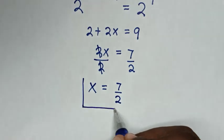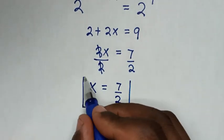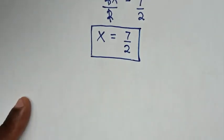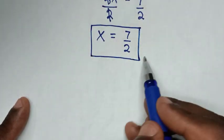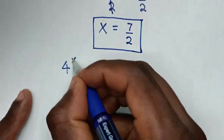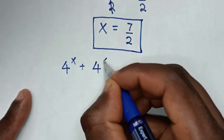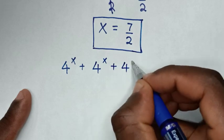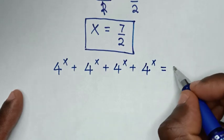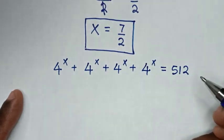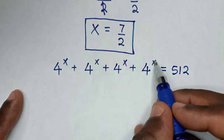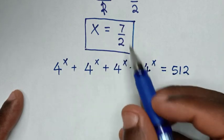Therefore x equals 7/2 is the final answer. Now to check, we substitute x equals 7/2 back into the original problem: 4 power of x plus 4 power of x plus 4 power of x plus 4 power of x equals 512, substituting 7/2 in the positions of the powers.